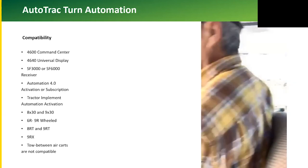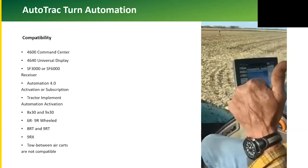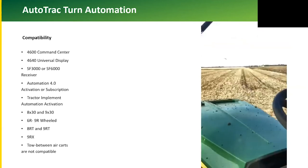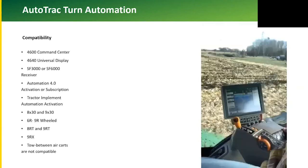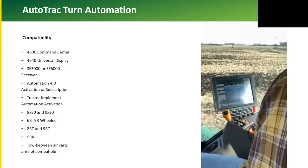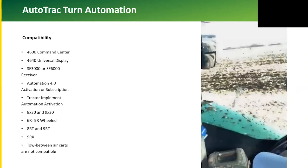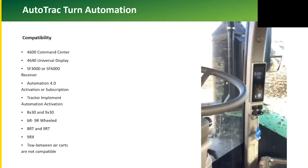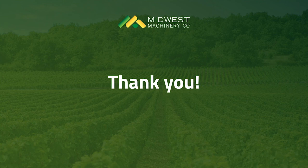For machine compatibility with Autotrack turn automation, you need a 4600 or 4640 display, an Automation 4.0 activation or subscription, and a StarFire 3000 or 6000 receiver. For tractor compatibility: 8030 series and 9030 series wheeled machines are supported; 8030 track and 9030 track machines are not supported. 6R through 9R wheeled machines, 8RT, 9RT, and 9RX machines are supported. Tow-between carts are not compatible, and there are some transmission limitations, so check with your sales staff. This product is only available in tractors — sprayers and floaters are not compatible as of this time.